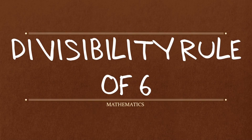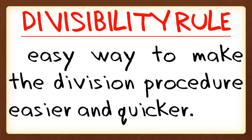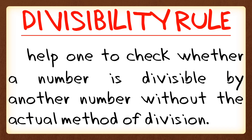In this video, we're going to learn about the divisibility rule of 6. Divisibility rule is an easy way to make the division procedure easier and quicker. It helps one to check whether a number is divisible by another number without the actual method of division.